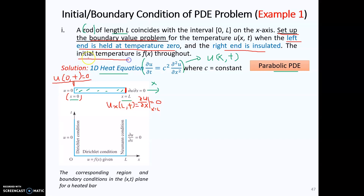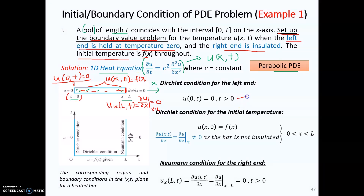Lastly, it is given that the initial temperature is S(x). With that, we know that the temperature distribution U for all x locations at time equal to zero will be equal to S(x). This is your initial condition. With that, you have successfully obtained these three conditions: two boundary conditions and one initial condition.